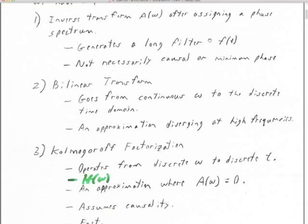If you remember the impulse response of the Hilbert transform, that's a very, very long filter. To properly accomplish filtering, no frequency of our desired amplitude spectrum can have zero response, because we've got to take the log of that amplitude spectrum — so it can't be zero anywhere. In general, that Hilbert transform is going to give us a very long time-domain filter to accomplish that A of omega filter.